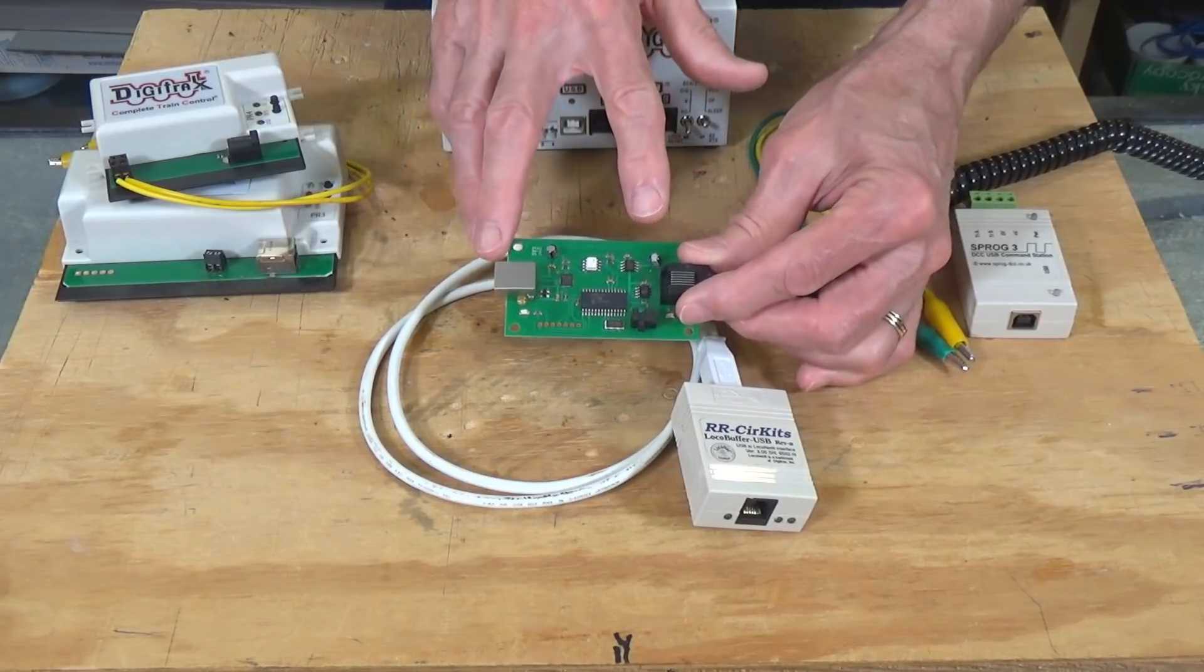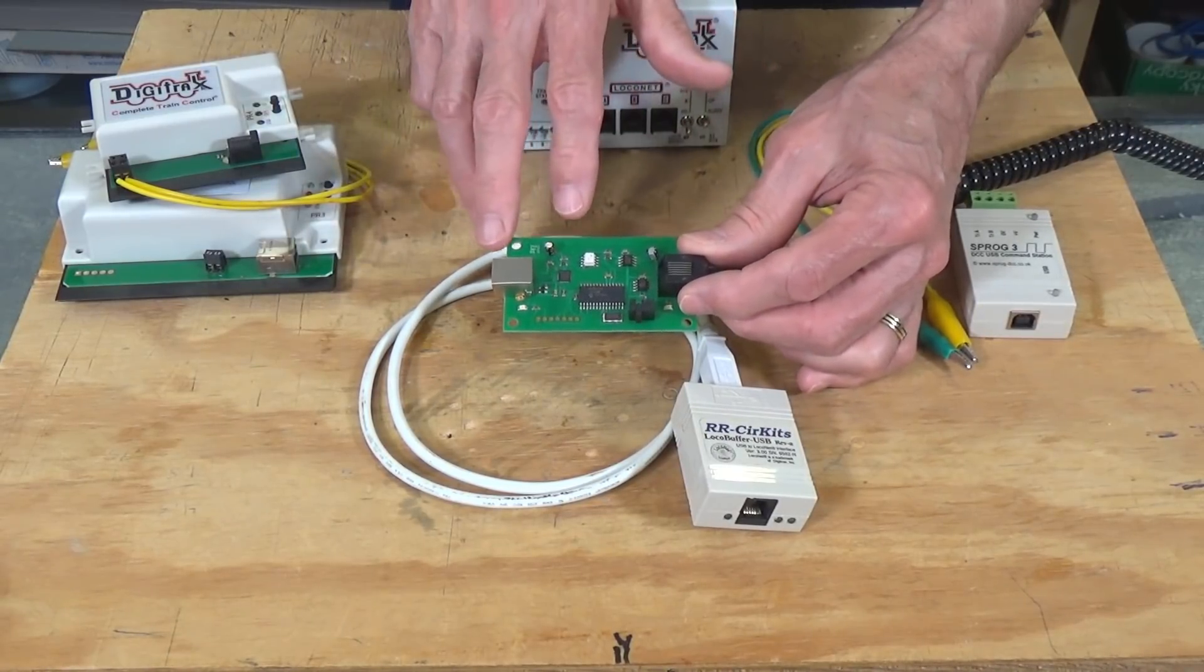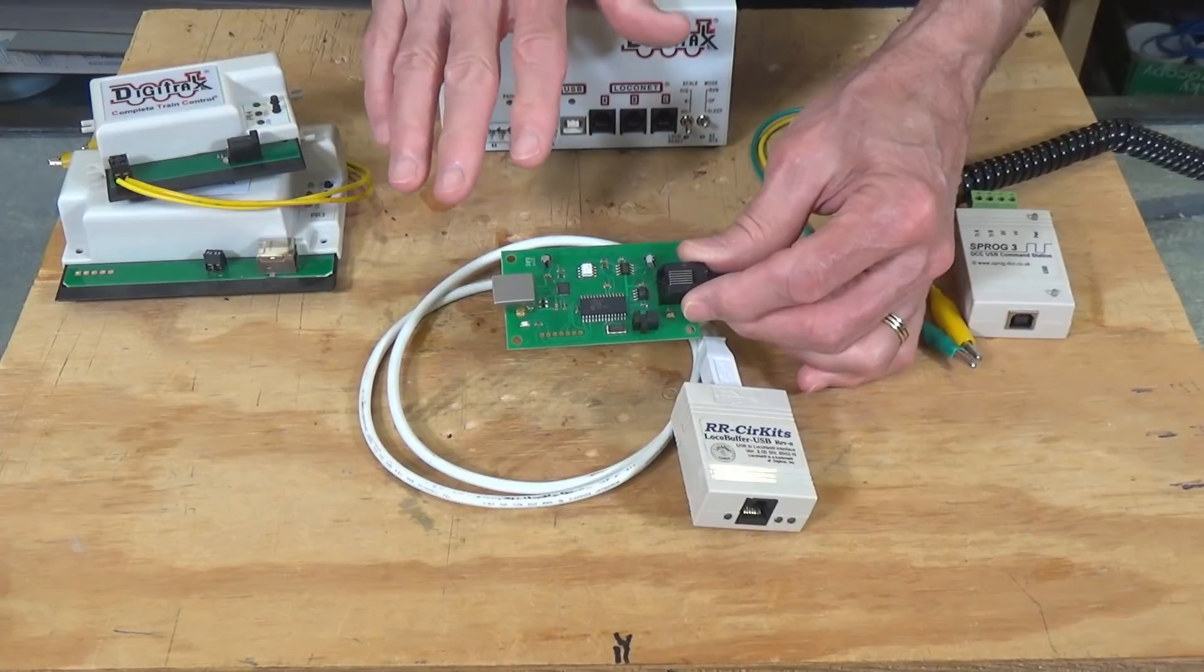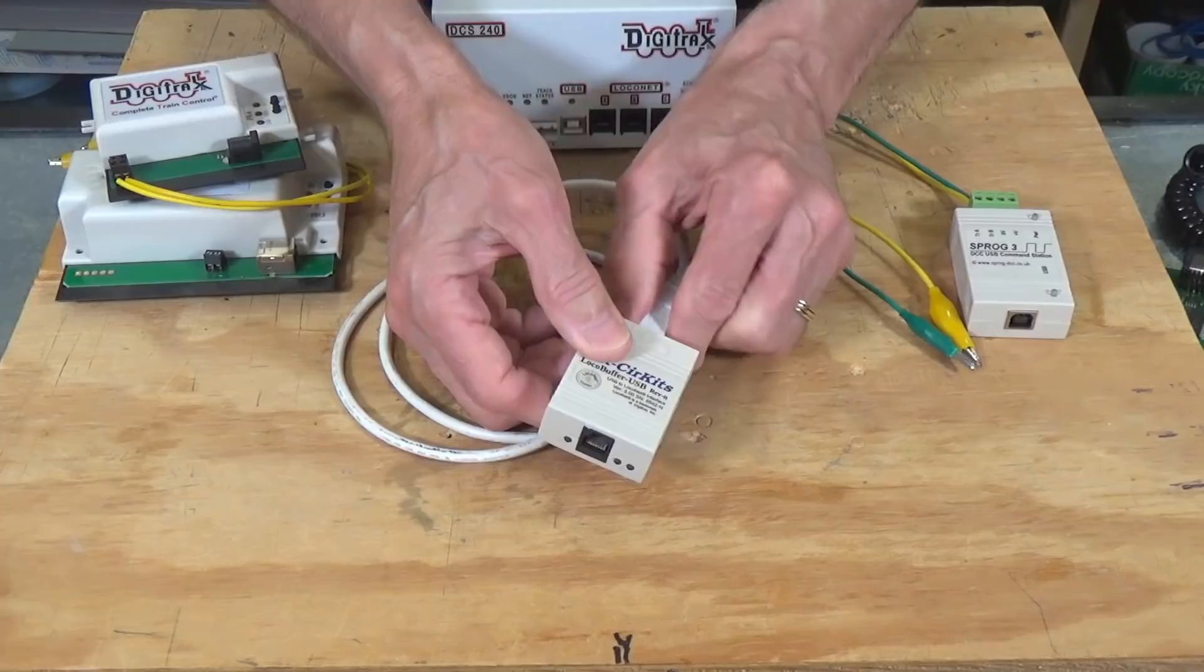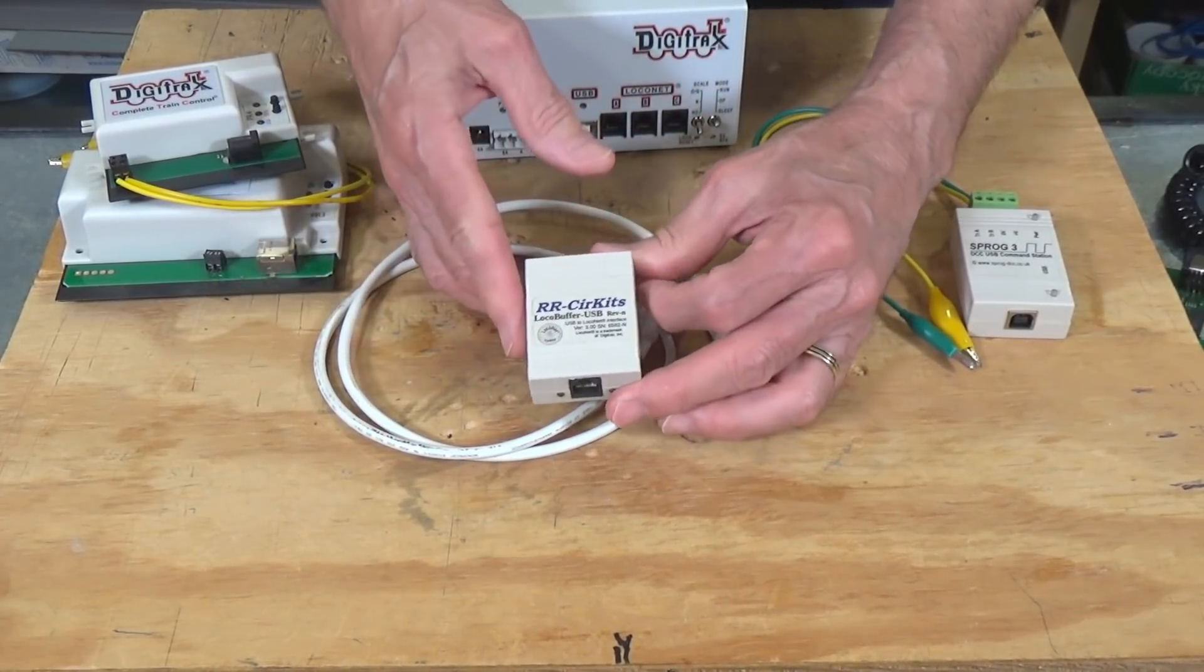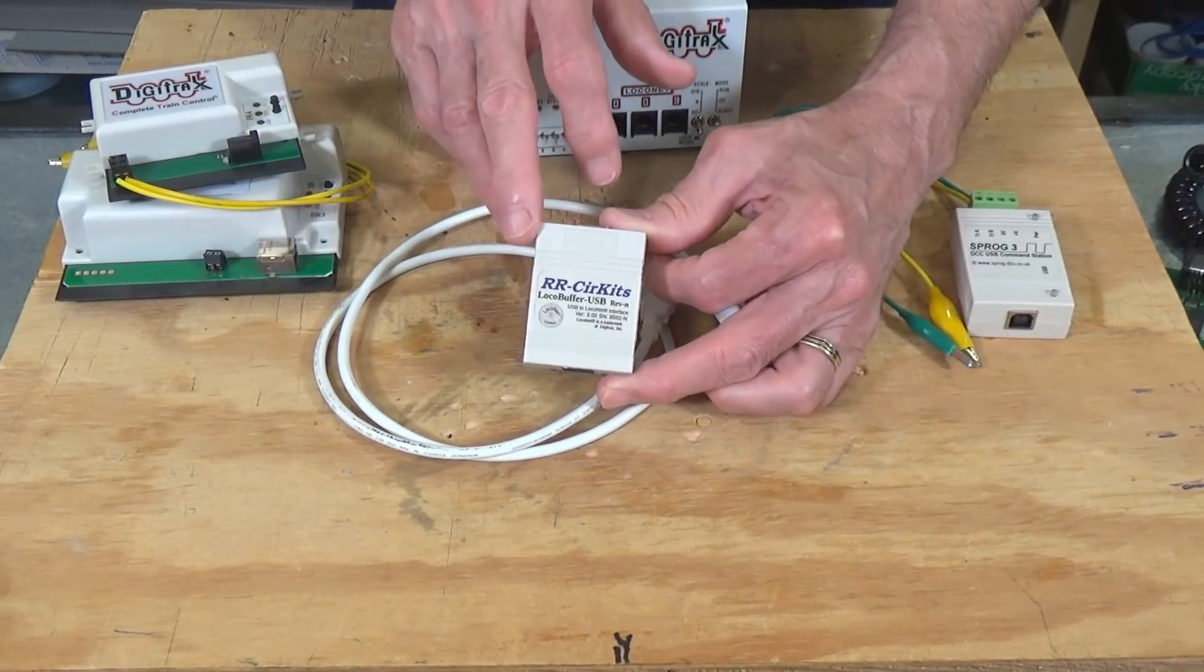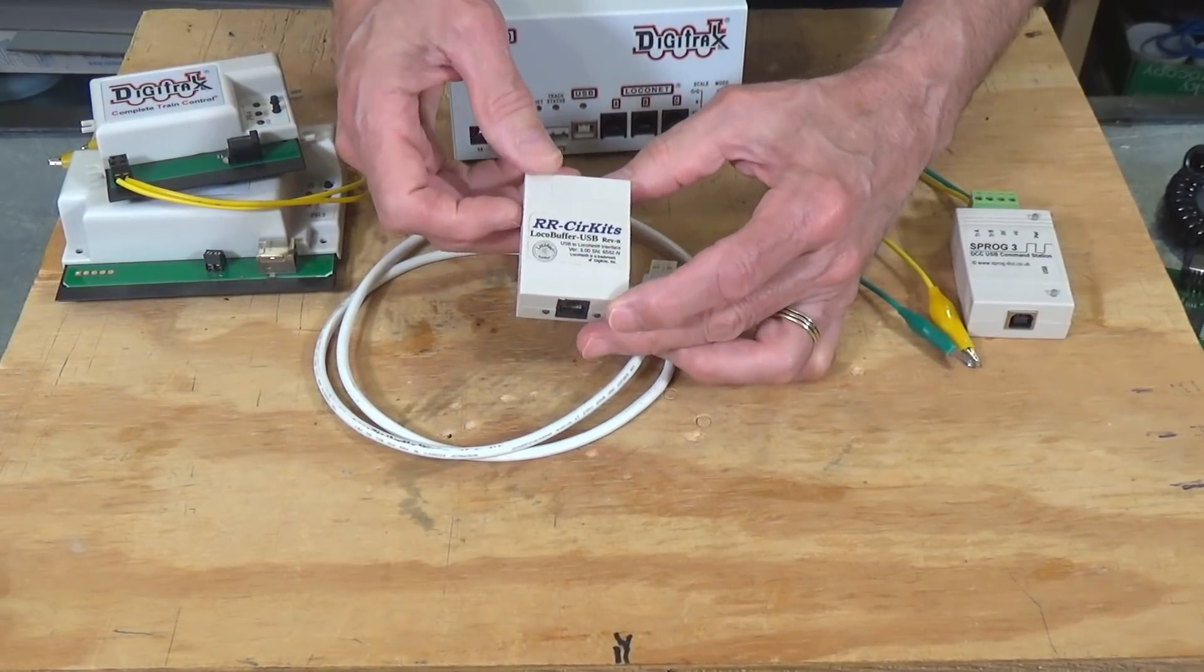Unlike the ESU device that I just showed you. And in that respect, the NCE device is a dumb interface as well because it cannot be used for programming by itself. Of course, the NCE PowerCab can be used for programming. And this can interface with JMRI to allow you to use JMRI with your PowerCab to do programming. So this is a fairly robust device. It's been around for a number of years in various versions. And if you're a Digitrax user, it's a very popular option for doing programming with JMRI.